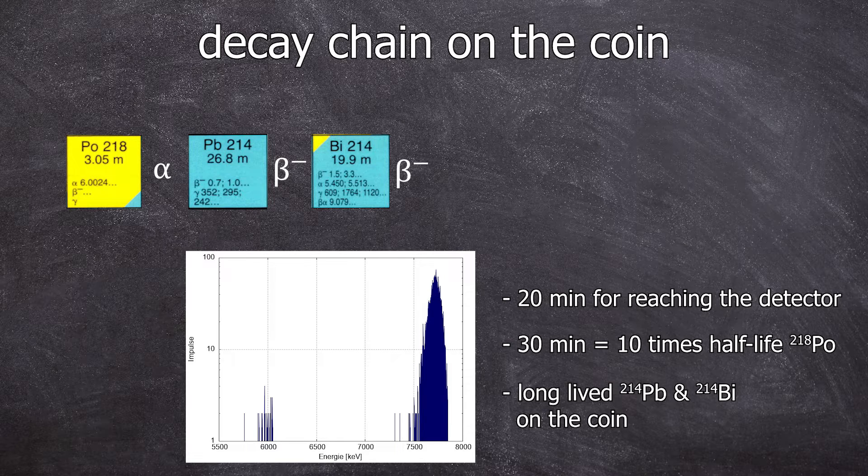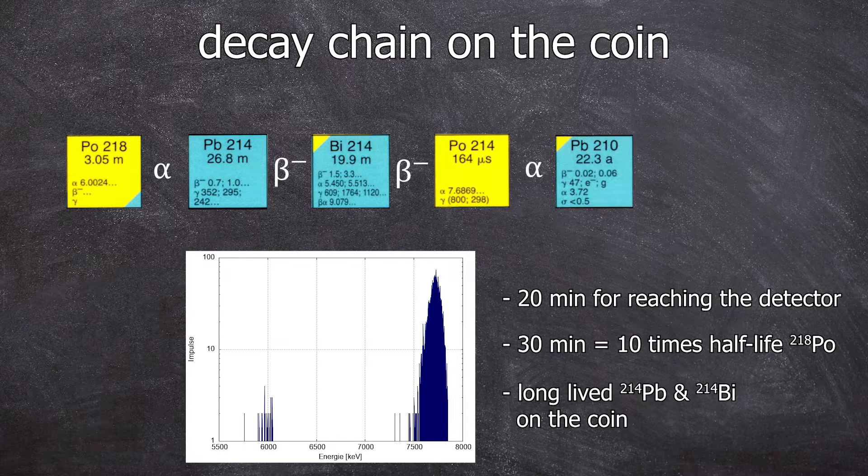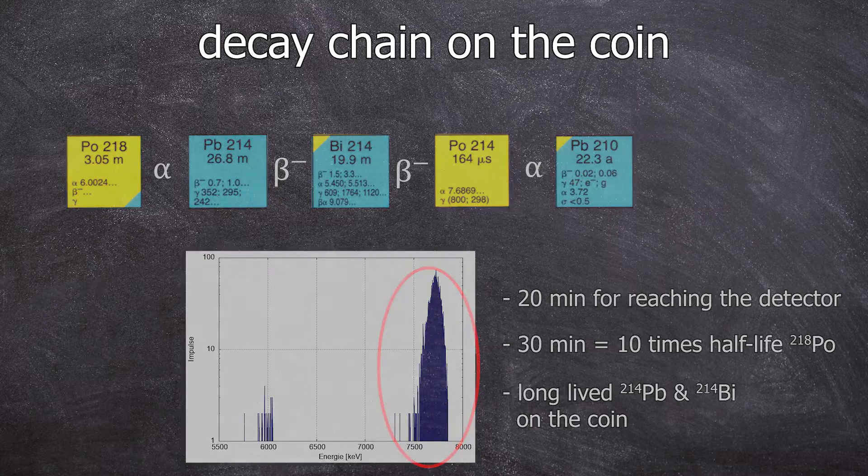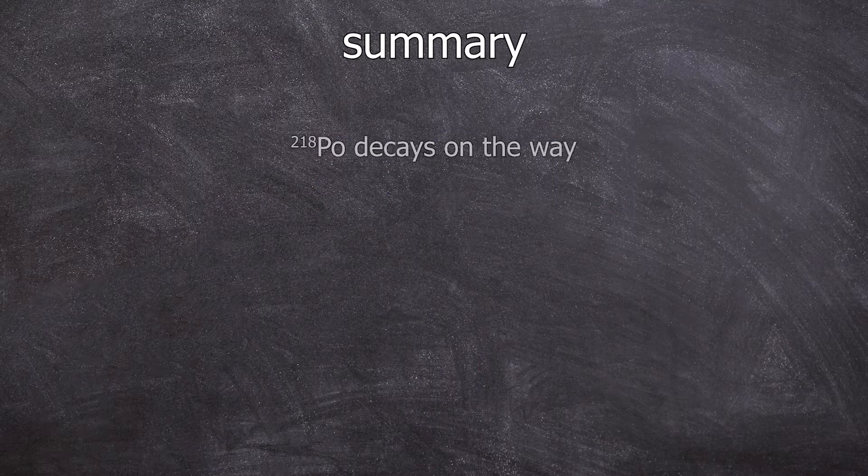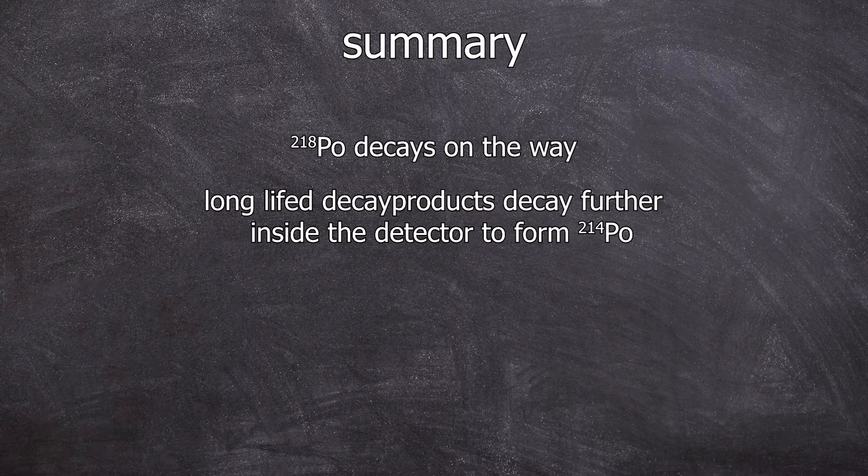And this bismuth now constantly produces more and more shortly-lived polonium 214, which can decay almost immediately during the measurement, causing this peak to seem as large as it is. So most of the 218s have decayed on the way to the detector and the decay products ensure that the polonium 214 is freshly formed in the detector so it can be measured directly.